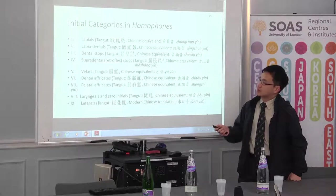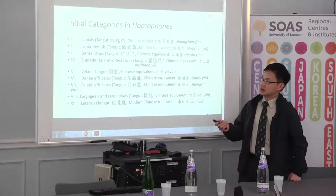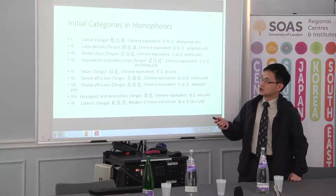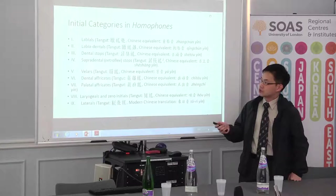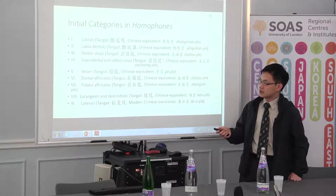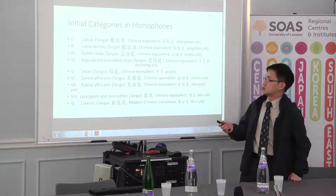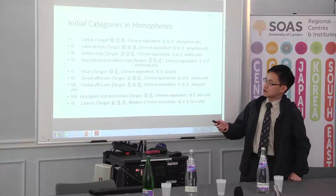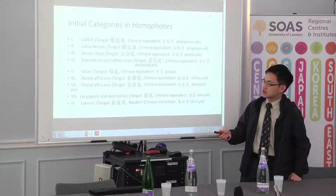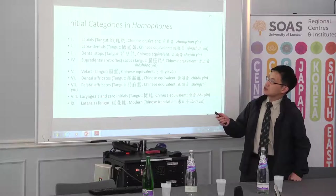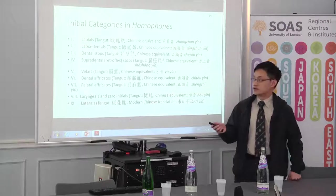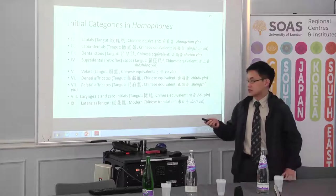In the Homophones Tangut, there are nine categories of initials: labial, labial dental, labial stops, supradental, velars, dental affricates, retroflex affricates, and so on — these are the first through ninth categories in the Homophones. This is very important in our later discussion.